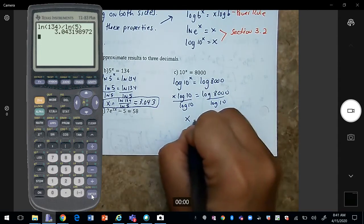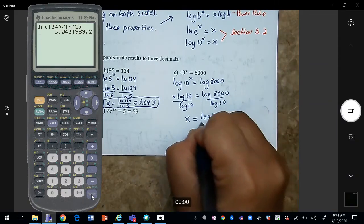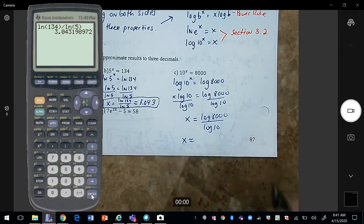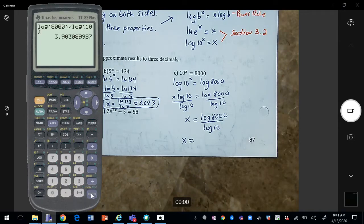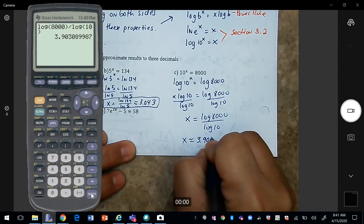And so we get x is equal to log 8000 over log 10. That's your exact answer. The approximation is 3.903.